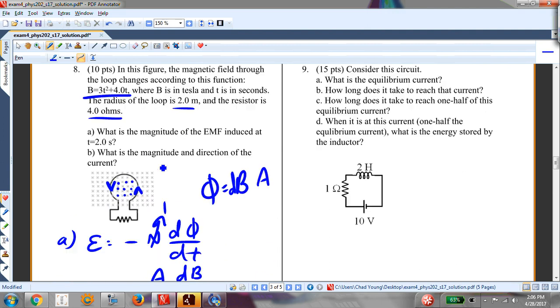All right. So, for this circuit, what is the equilibrium current? Okay. Well, that's easy. It's just I equals V over R because at equilibrium, the inductor just becomes a piece of wire. So, that's just going to be 10 over 1 or 10 amps. That's my maximum current.